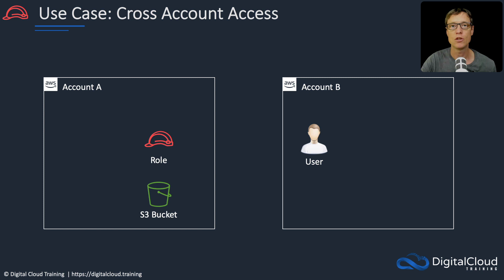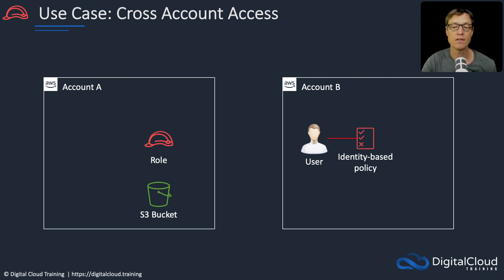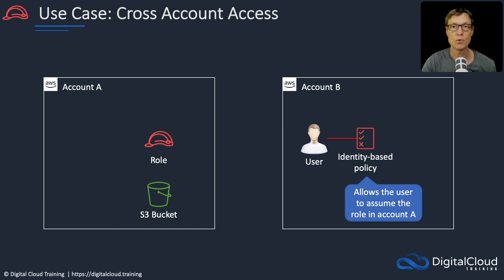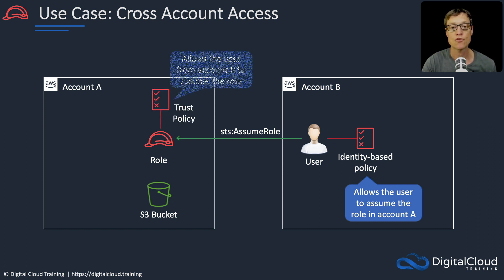In this example, we need a user in Account B to be able to assume a role so he can access an S3 bucket in Account A. That's the only rights he's going to have — the ability to access that bucket. We assign an identity-based policy to the user, and that will allow the user to assume the role in Account A. You need the privilege to run the STS AssumeRole API action to be able to assume the role. So he runs the API action and assumes the role in Account A. The trust policy of the role in Account A must allow the user from Account B to assume the role.